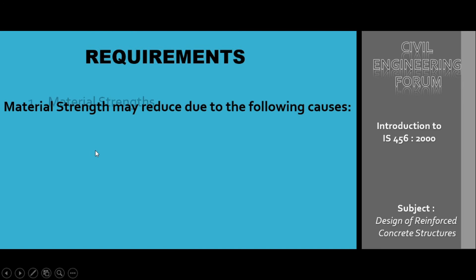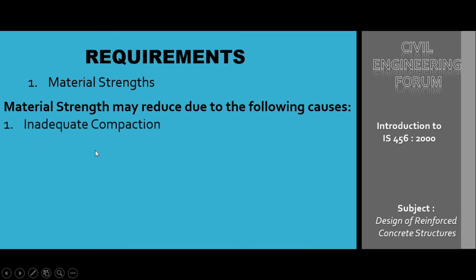We'll discuss the causes which may reduce our expected material strength. The first cause is inadequate compaction — while compacting fresh concrete, there may be some places where adequate compaction is not given, reducing material strength there. The second cause is inadequate curing. Curing plays an important role in the strength development and durability of concrete. Proper curing must be done immediately after concrete placing and finishing; otherwise, the concrete will not achieve its desired strength.